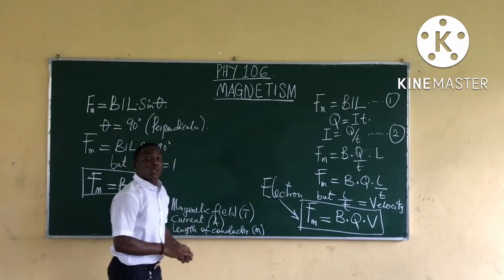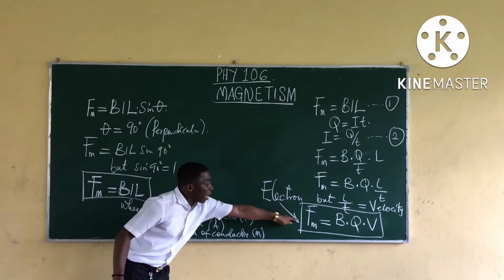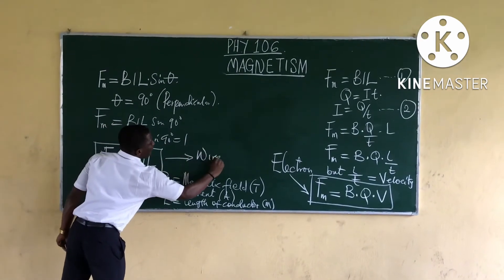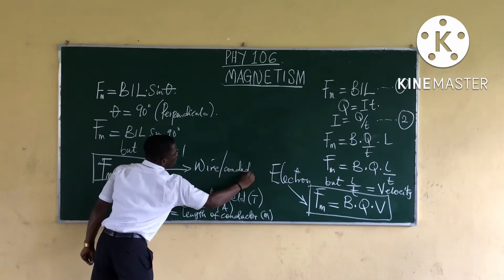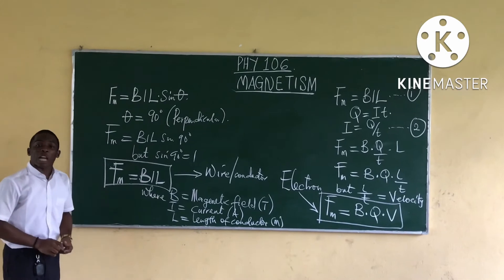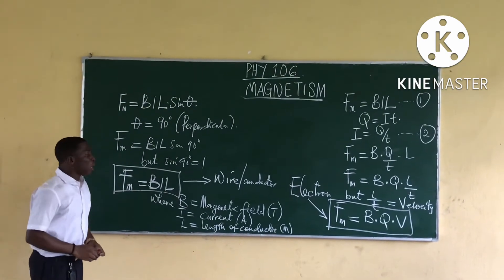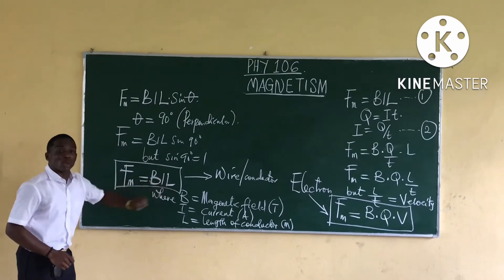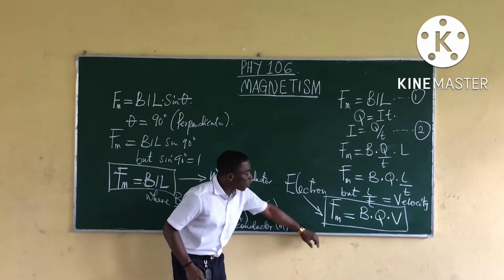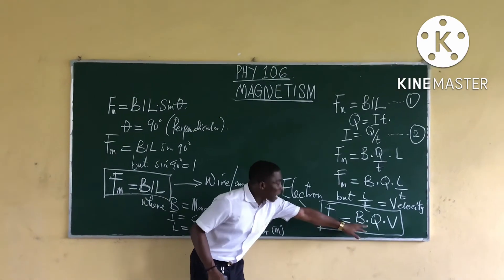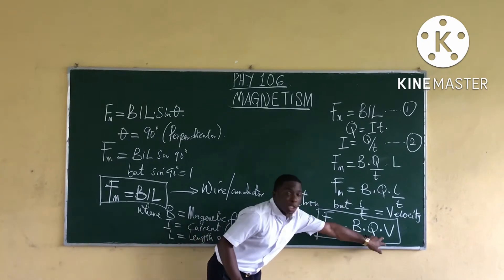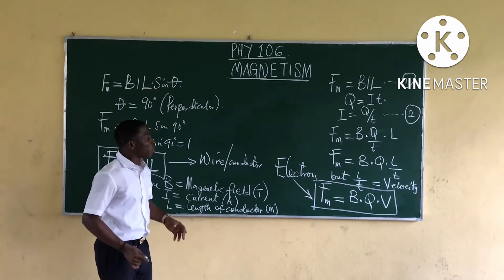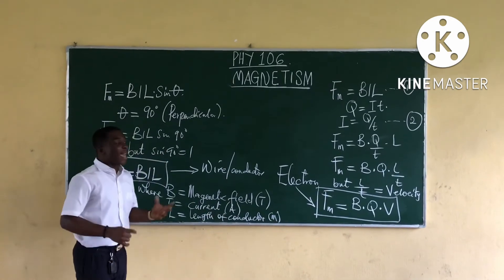To summarize: if you are asked to calculate the magnetic force for an electron, use F = BQV. If you are asked to calculate the magnetic force for a wire or conductor, use F = BIL. We now have the two important formulas used in magnetism, and we'll look at examples using both.